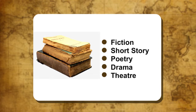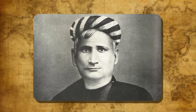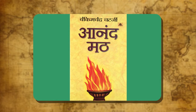All forms of Indian literature — like fiction, short story, poetry, drama and theatre — witnessed a great boom in the 19th and early 20th centuries. The European influence on Indian novelists is quite clear. B.C. Chatterjee is the most famous Indian novelist in the Bengali language. His well-known work Anand Math contains national songs such as Vande Mataram.